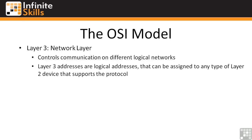Layer 3 addresses are logical addresses that can be assigned to any type of Layer 2 device that supports the protocol you're using. For the purposes of this course, we're always going to be talking about TCP/IP. IP is the Layer 3 portion of that protocol, so the Layer 3 address in a TCP/IP network is the IP address. If you've been around computers and done any networking, you understand that an IP address can be assigned to whatever computer you want.